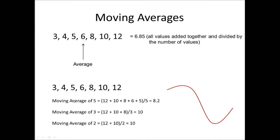With moving averages, we have a moving average period or length. So if our moving average period or length was 5, we would take the last 5 numbers — 12, 10, 8, 6, and 5 — add them together, divide by 5, and that would give us our moving average.